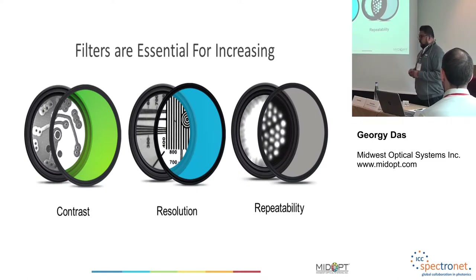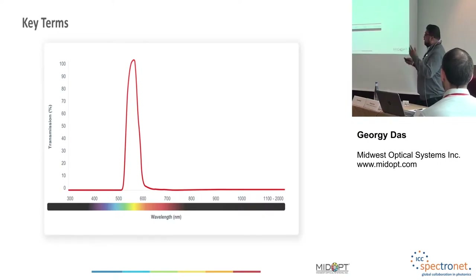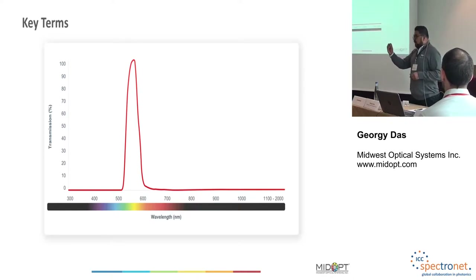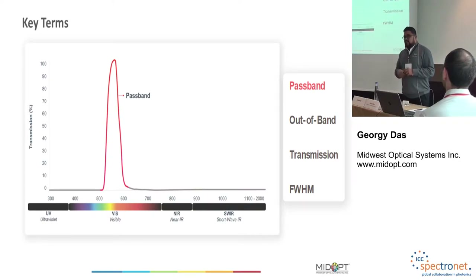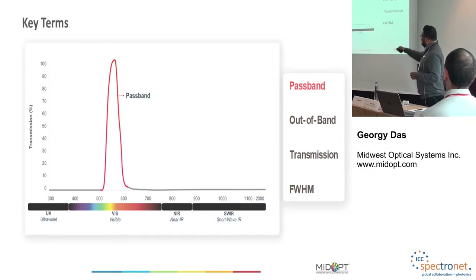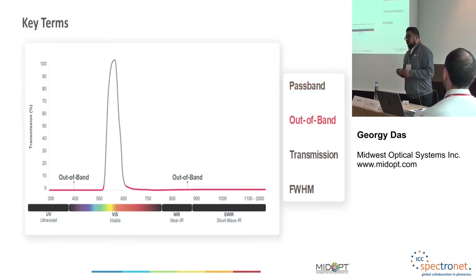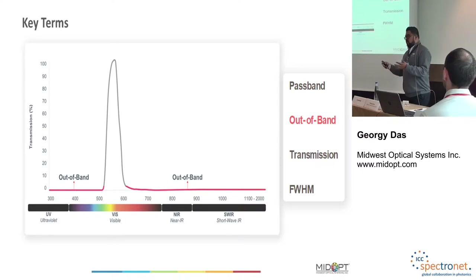Before I get into those things, I just want to go over some key terms. This is something called the transmission curve. Every time you purchase or look at a filter, you'll have a transmission curve that lets you know which part of the wavelength — which colors — are being passed, and which part is being blocked. This is called a pass band. If you've ever used a band pass filter, this is why it's called that — it has a pass band, which tells you what part of the wavelength is being passed.